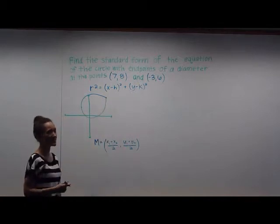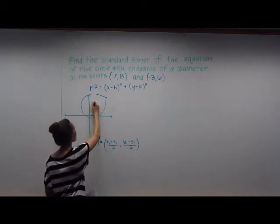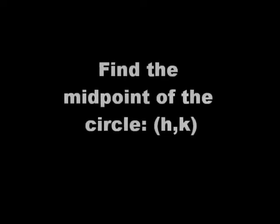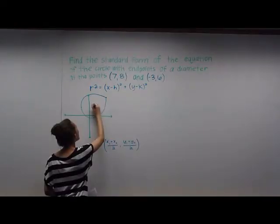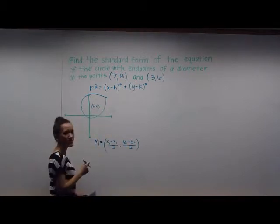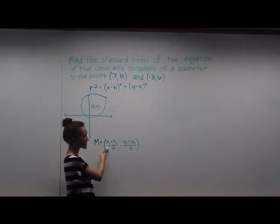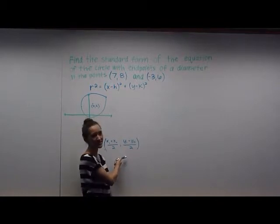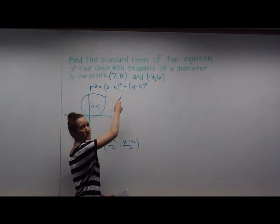What we need to do is find the radius. We're going to find the midpoint of the circle, which would be this point right here, and we'll call it (h,k). The midpoint formula is (x₁+x₂)/2 for the x-coordinate, and (y₁+y₂)/2 for the y-coordinate. We're going to plug in the given points.